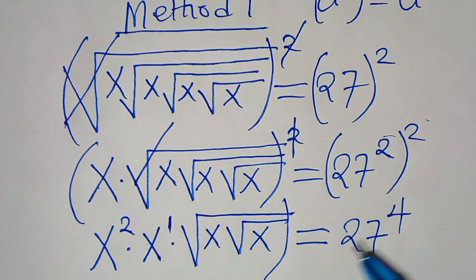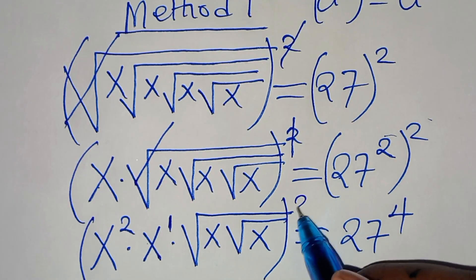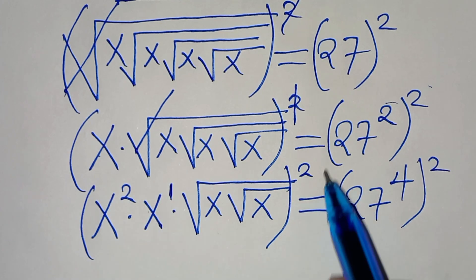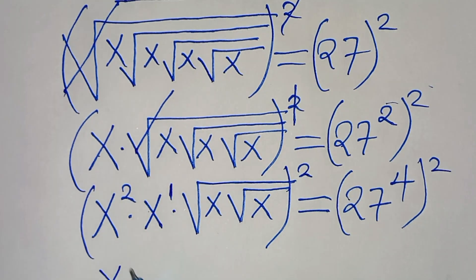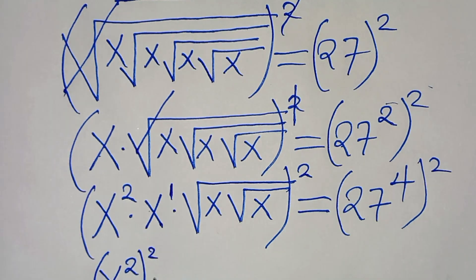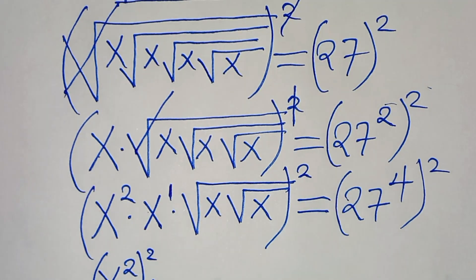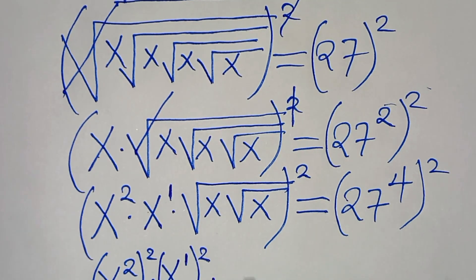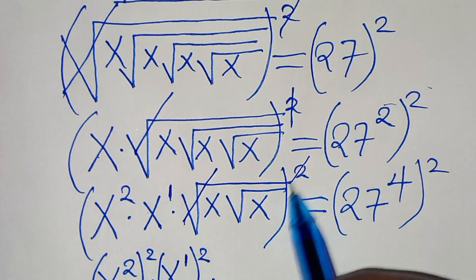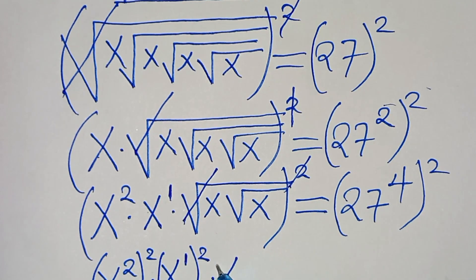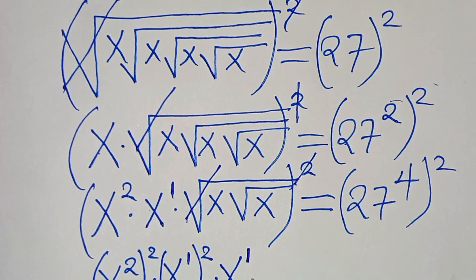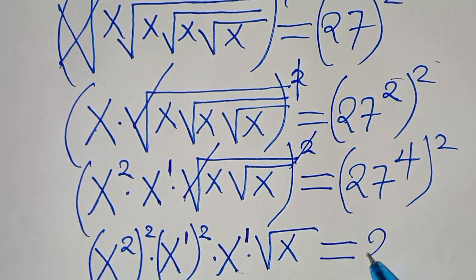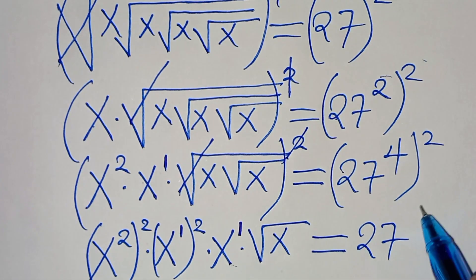The next step is to square again on both sides. Now we have x squared, raised to the power of 2, multiplied by x to the power of 1 raised to the power of 2, and we eliminate the third square root sign. So this gives x raised to the power of 1, multiplied by the square root of x. This equals 27 raised to the power of 4 times 2, which is 8.